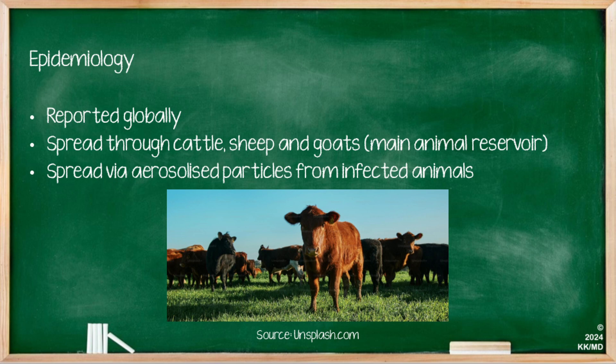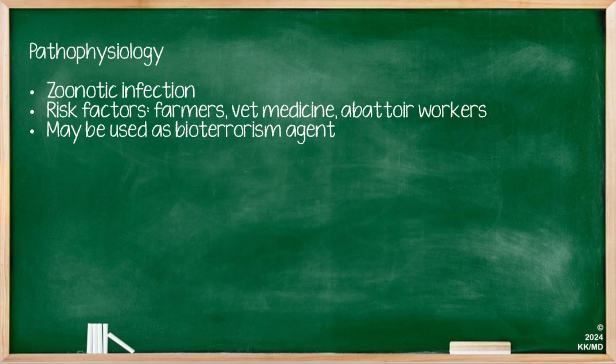Coxiella burnetii infections are reported globally and they spread through cattle, sheep and goats, which are the main animal reservoirs. The spread is via aerosolised particles from these infected animals. Coxiella burnetii is a zoonotic infection and the risk factors are particularly people who work in farming, veterinary medicine and those who work in abattoirs. It's important to also note, particularly for question vignettes, that Coxiella burnetii may also be used as a bioterrorism agent.